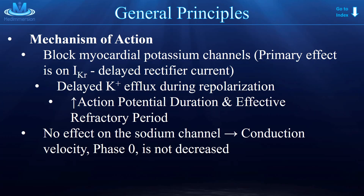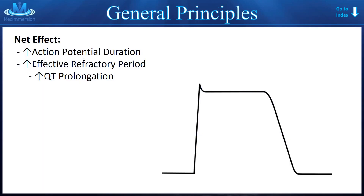Delaying the potassium efflux during the repolarization phase increases or stretches out the action potential duration and also the effective refractory period. These drugs do not have any effect on sodium channels, meaning that conduction velocity in phase 0 wouldn't be affected. Visually, the action potential is stretched out, the effective refractory period is increased, and that means the QT interval is prolonged.